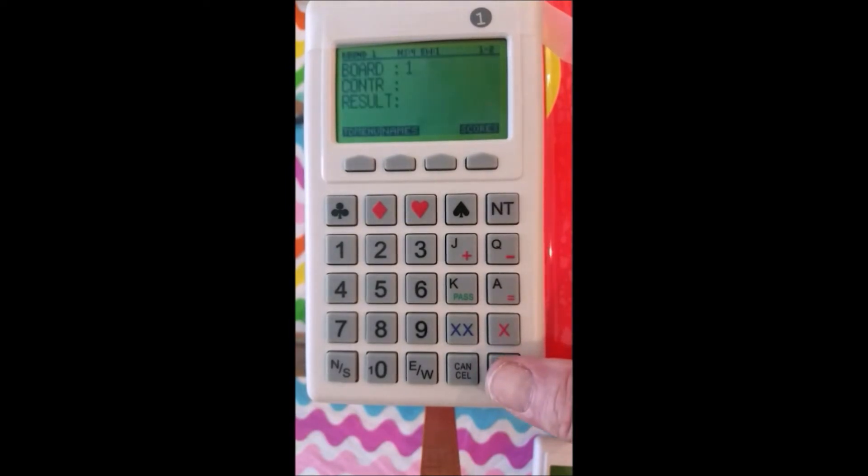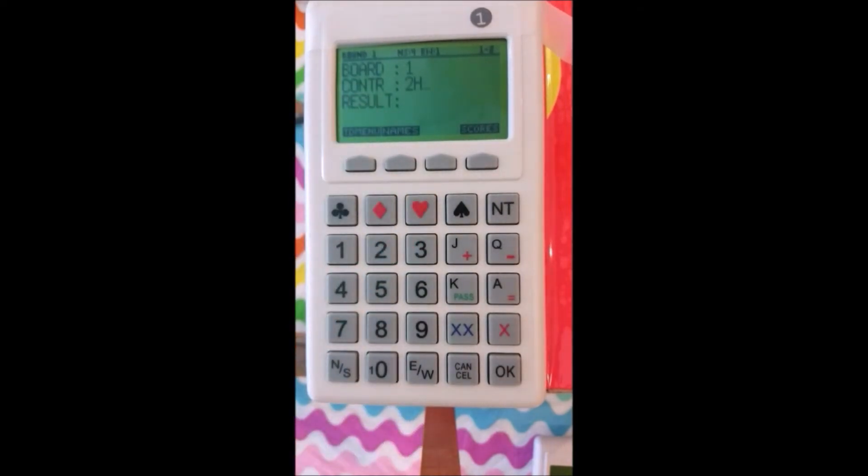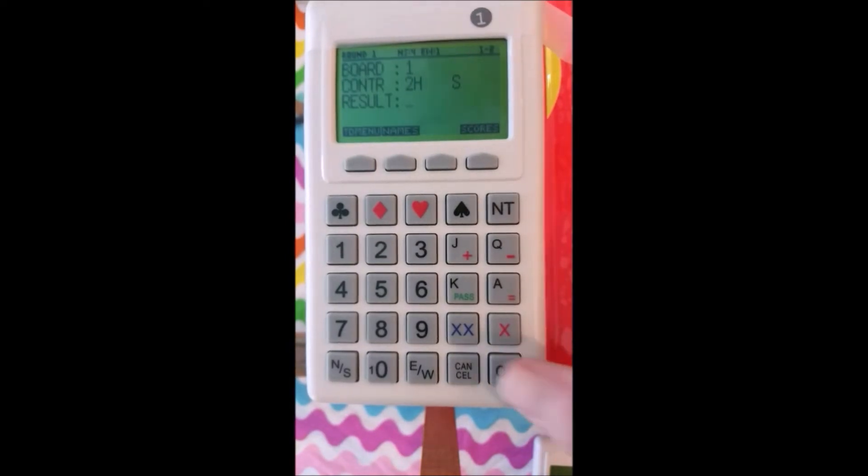And it tells us who we're playing. It says Board 1. I keep hitting OK until it says what's the contract. Now after the bidding is complete, North will enter the contract. In this case, I'm going to say they bid two hearts, and it wants to know where, and I'll say it's in the south by hitting the button here. And say OK.